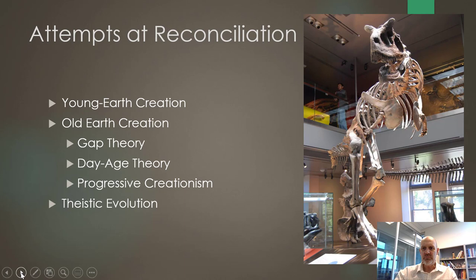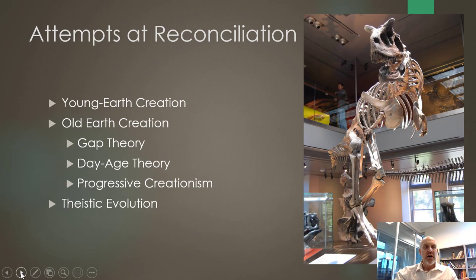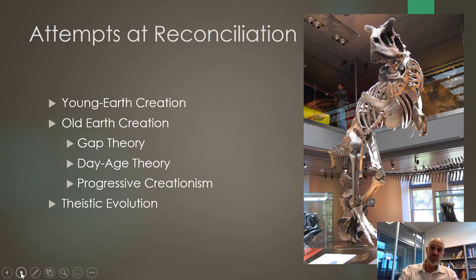Then we have theistic evolution, which basically adopts the entire naturalistic evolutionary perspective completely. They believe God used time, evolution, and all of that — very naturalistic, no miracles — and that humans eventually evolved from apes. I believe this view is personally dangerous. Old earth creationism is more acceptable because they reject the death of Adam and Eve before the fall; they believe Adam and Eve were eternal and fell into sin. Theistic evolution is a real problem because there is no fall into sin — if Adam just evolved from an ape, then there is no literal fall. The reason humans do what they do would just be instinct from animal ancestors.